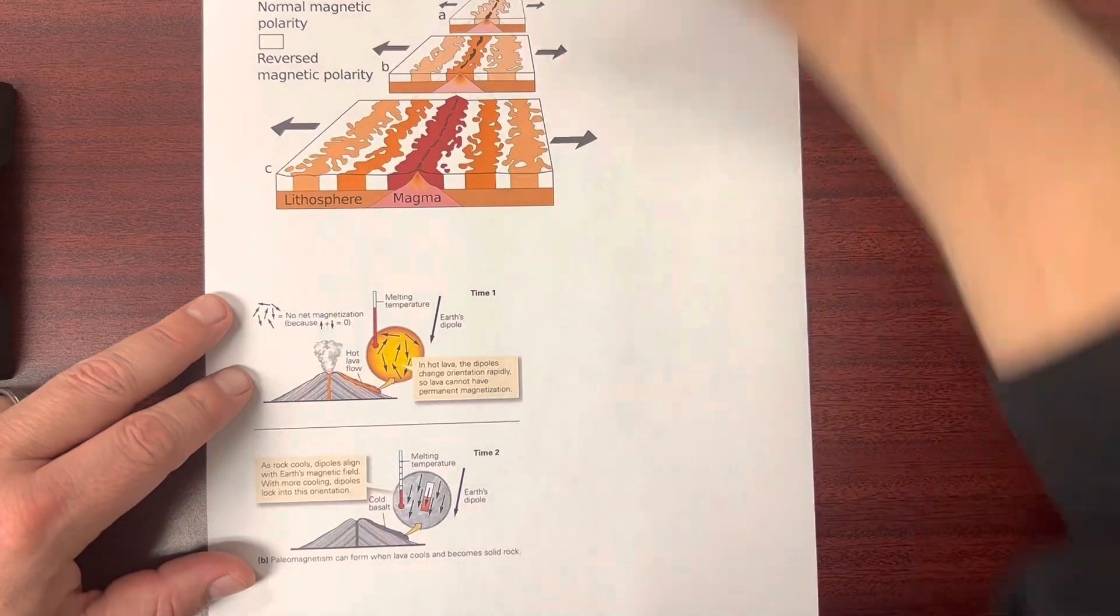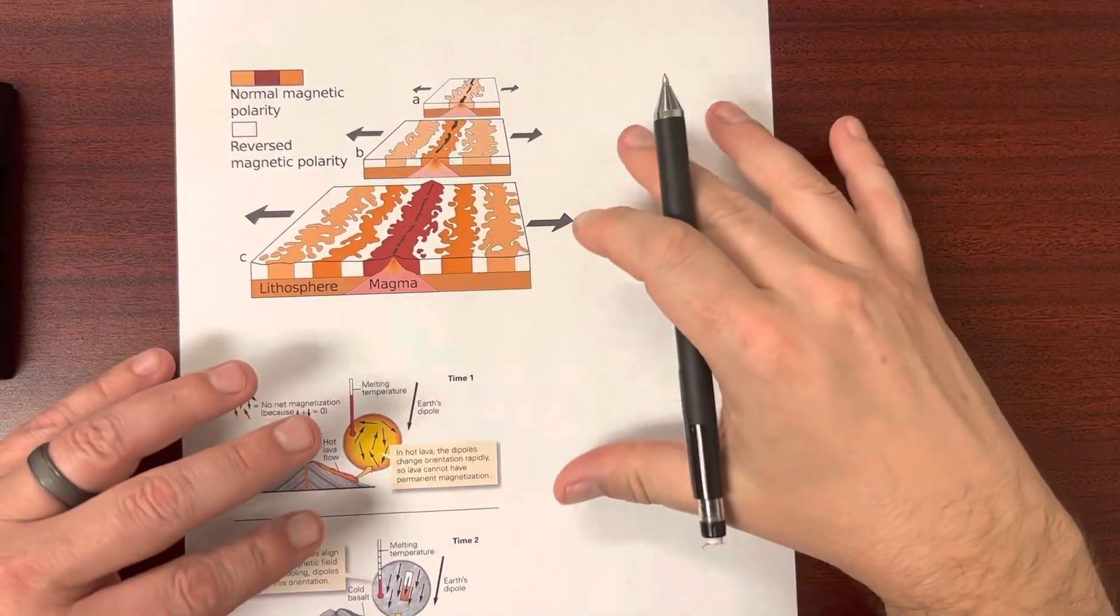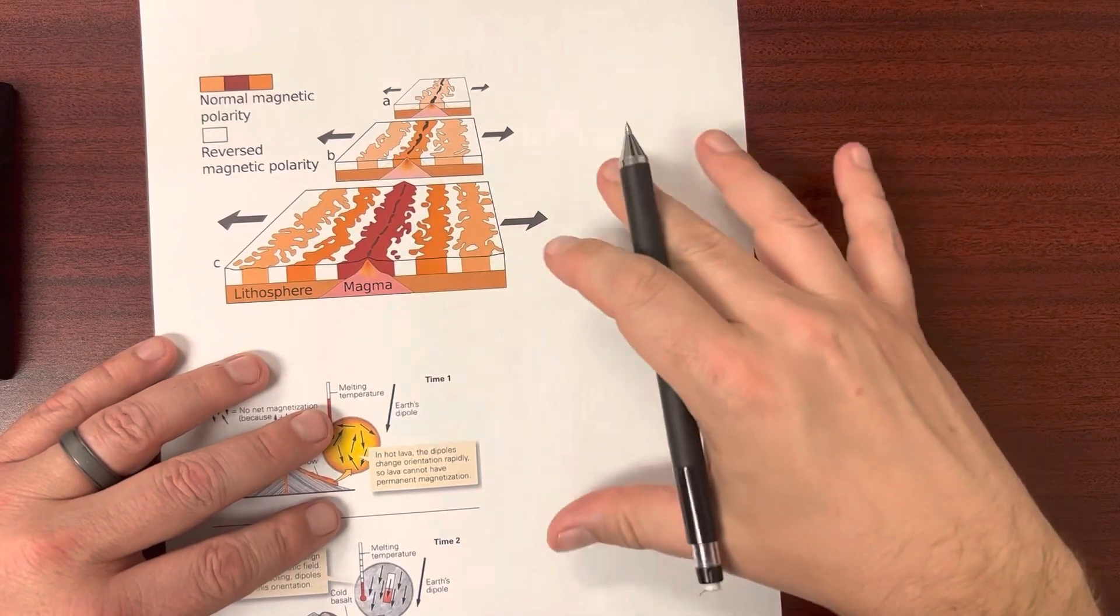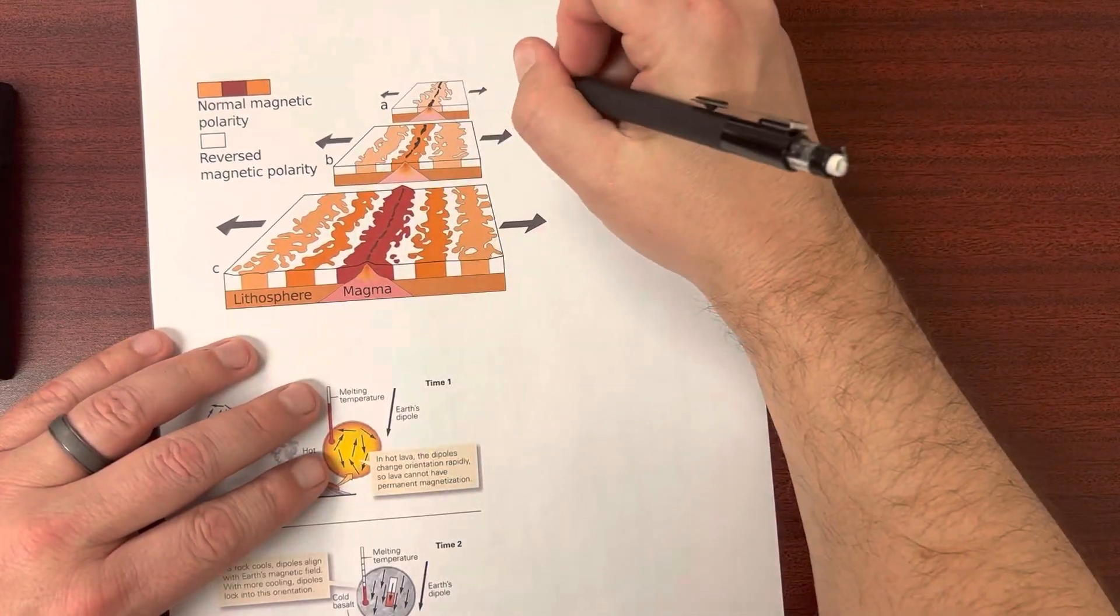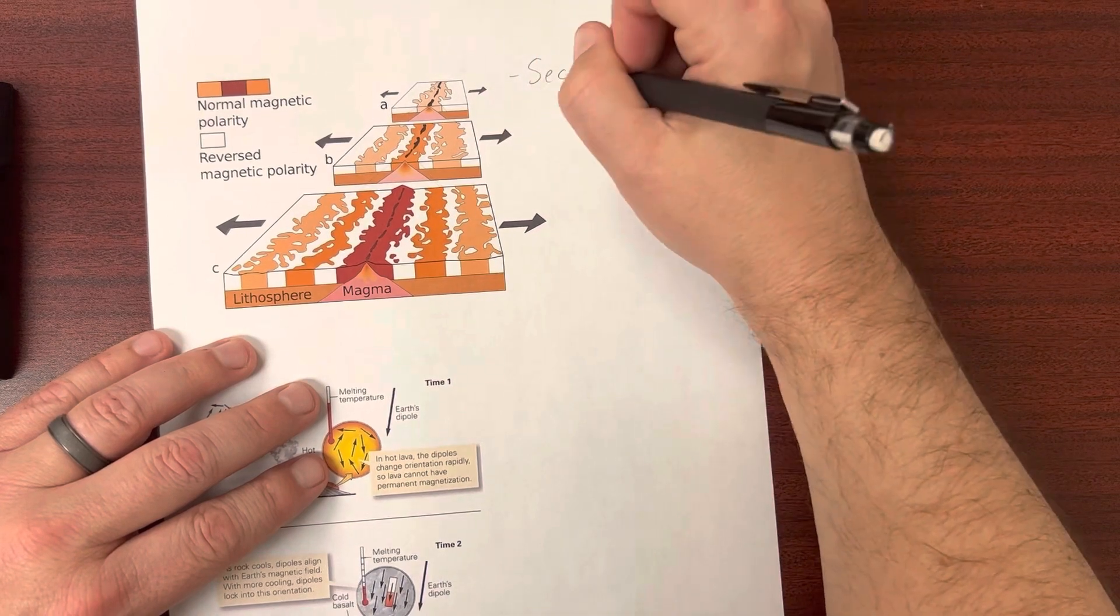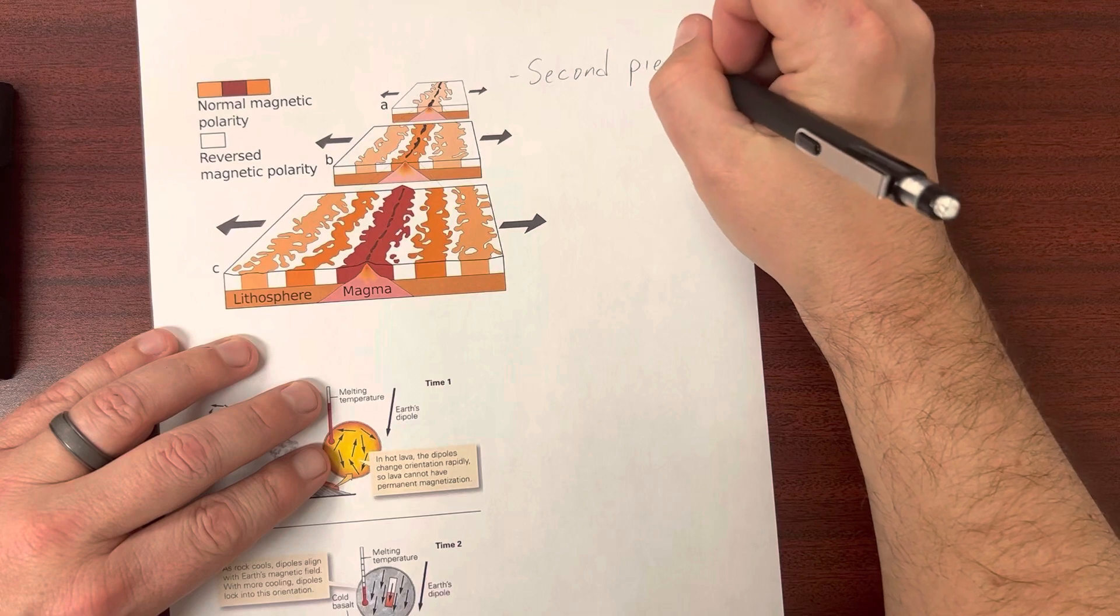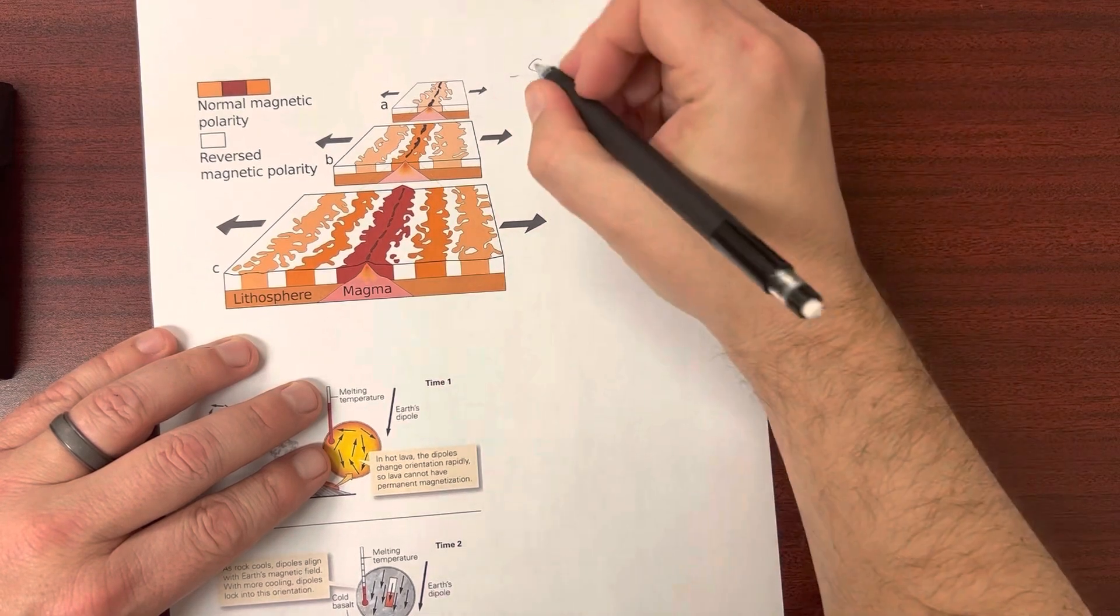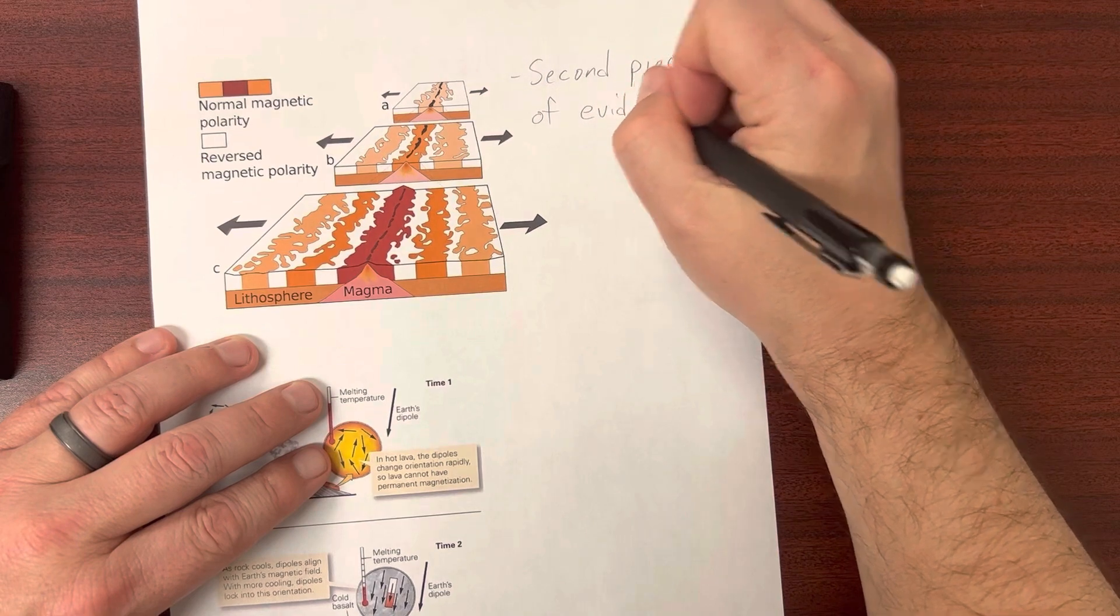But there's other evidence. As in most of the cases of scientific discoveries, major scientific discoveries, there's multiple things that point to the same conclusion. In this case, our second piece of evidence comes from looking at how minerals line up in the rock of the ocean floor.